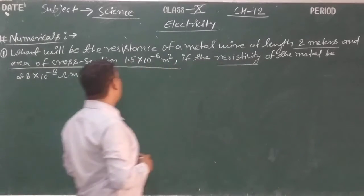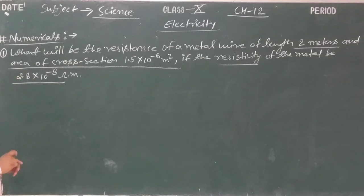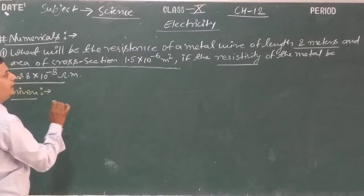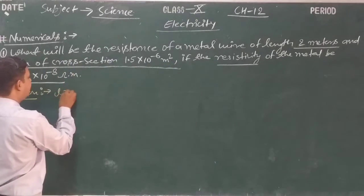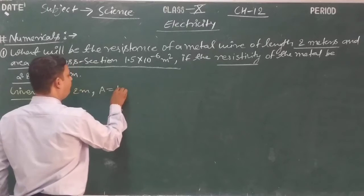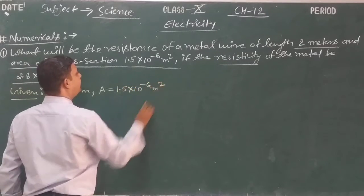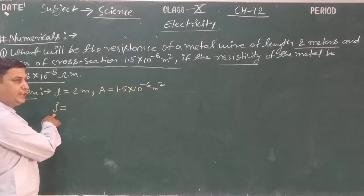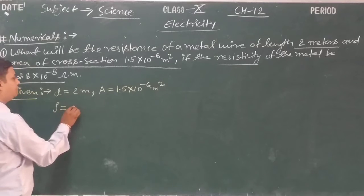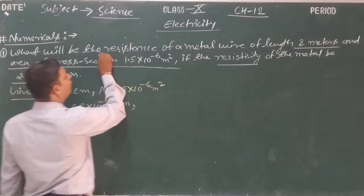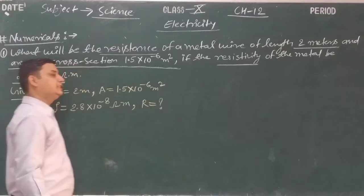According to the numerical, what is given: length L = 2 meter, area of cross-section A = 1.5 × 10⁻⁶ m², and resistivity rho = 2.8 × 10⁻⁸ ohm·meter. We have to find the value of resistance R. Since Ohm's law is not applicable here, we will use the formula of resistance in the form of resistivity: R = rho × L / A.